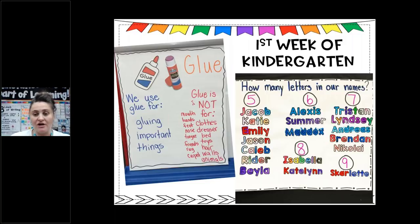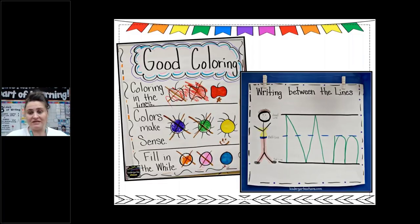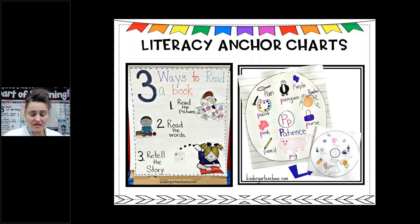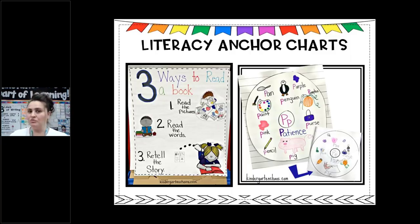Another interactive anchor chart — our names in kindergarten. I print out their names in bubble letters, they color them, we count how many letters they have in their name, and they get to come up and glue their name on the anchor chart. I also talk about good coloring and writing between the lines, and headline, beltline, footline — these are all anchor charts that have been successful for me in helping kids understand expectations.